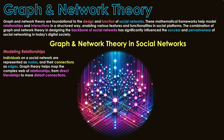Individuals on the network are represented as nodes and their connections are called edges — the lines between them. Graph theory helps map the complex web of relationships, from direct friendships to more distant connections, bypassing through nodes. We can see how everyone is connected: one person friends with one user, then friends with another, leading to a destination. This is the idea of six degrees of separation — mapping out how different nodes are connected to understand how data can be spread.